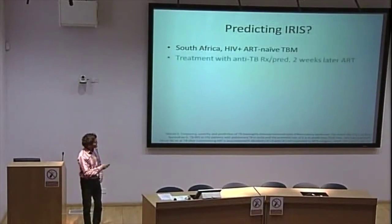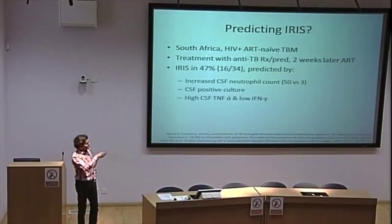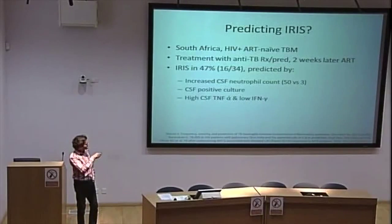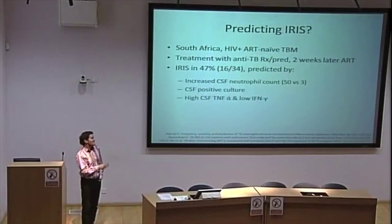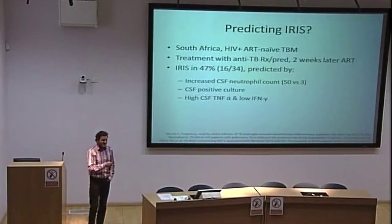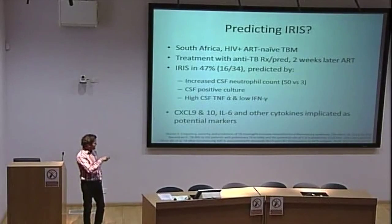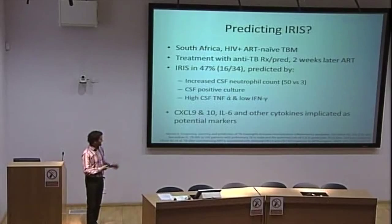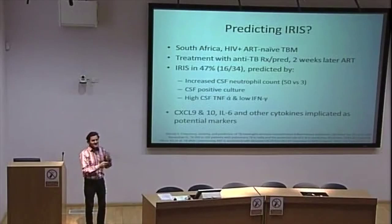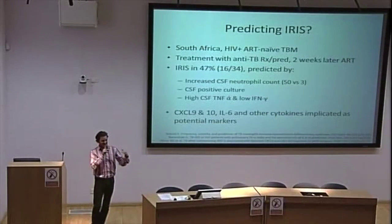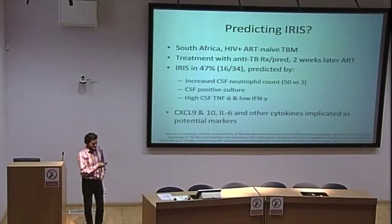How do you predict IRIS? A South African study in TB meningitis patients showed 47% developed IRIS, predicted by CSF neutrophil count, positive culture, high TNF-alpha, and low IFN-gamma in CSF. There's other ongoing work looking at CXCL9, CXCL10, IL-6, CXCL4, and other cytokines. It may well be that in the future we'll be able to assess someone at baseline — their symptoms, blood counts, ethnicity — and come up with an algorithm for predicting who we should monitor more closely or give pre-emptive steroids. But we're not there yet.